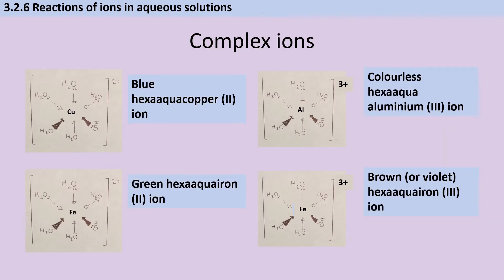The first specification point in this section is about different coloured complex ions that form when certain metal compounds dissolve in water. These are all quite straightforward to remember because they're all octahedral ions with six water ligands surrounding them. All you really need to remember is the charges of each ion and the colours they produce.